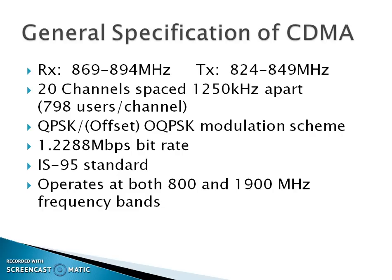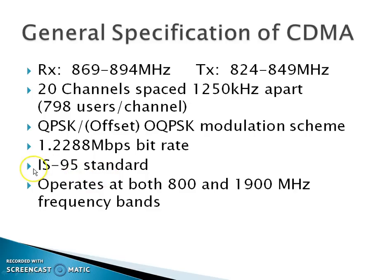General specifications for CDMA — Code Division Multiple Access: receiver is 869 to 894 MHz, transmitter is 824 to 849 MHz. 20 channels spaced 1250 kHz apart, meaning 798 users per channel. The modulation scheme is QPSK or offset QPSK, and the bitrate is 1.228 Mbps. The IS-95 standard is used, and CDMA operates at both 800 and 1900 MHz frequency bands.